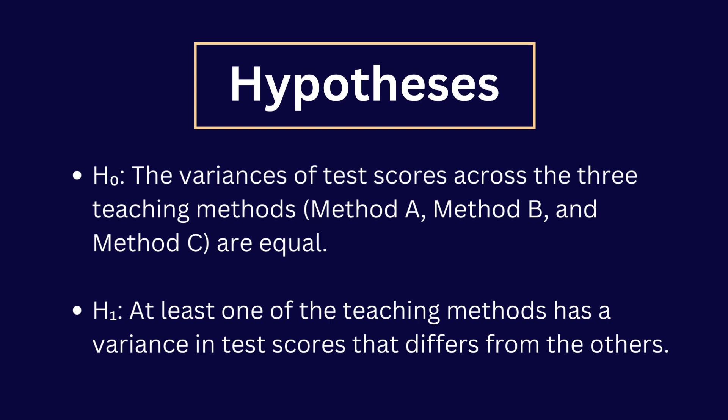Now we can build our hypothesis according to our research question. Our null hypothesis is the variance of test scores across the three teaching methods are equal. Our alternative hypothesis is at least one of the teaching methods has a variance in test scores that differs from the others.